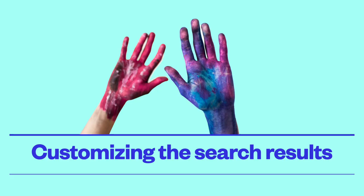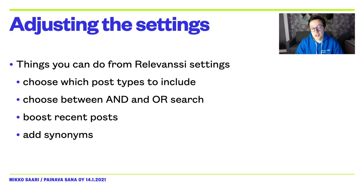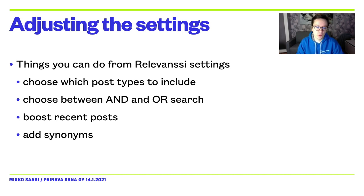Let's look at some ways Relevanssi can let you customize the search results. Relevanssi gives you plenty of ways to adjust the search experience to suit the needs of your site just from the settings alone. The indexing settings cover the basics of what is included in the index — you can choose which post types are included, which taxonomies are considered, which custom fields are used, and so on. The searching settings adjust weights and the ways the searching works. You can choose whether the default search operator is AND or OR. In an AND search, all search terms must appear in all documents, leading to more precise results, while in an OR search it's good enough if only one term appears. You can also boost recent posts and introduce synonyms, which will help users find what they need if there are multiple ways to refer to something.